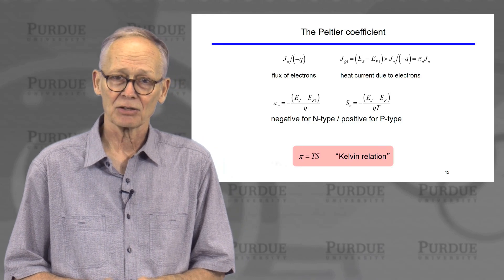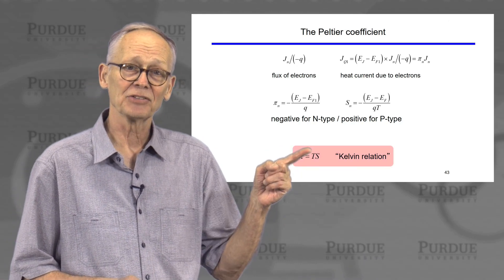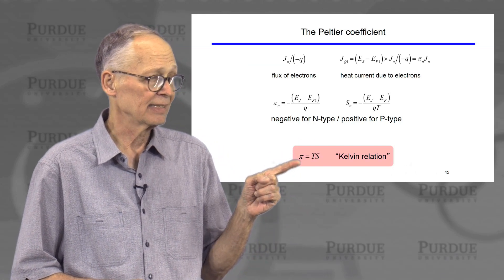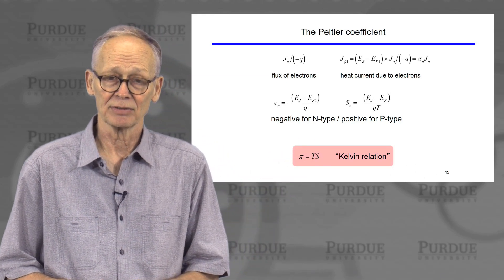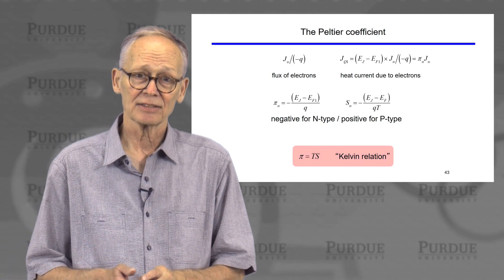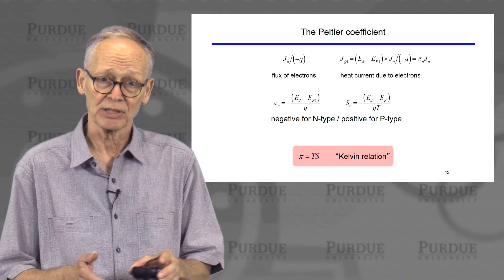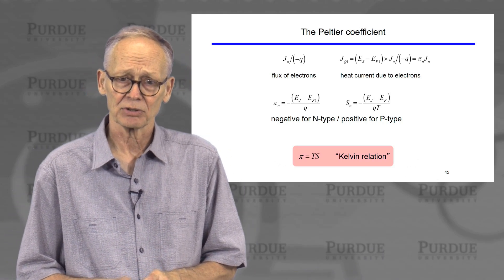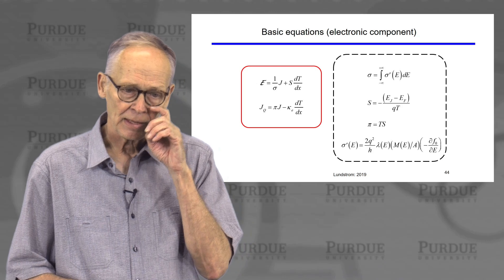But it also should remind us it looks very similar to the expression that we derived for the Seebeck coefficient. In fact, there is a close relation. This is a fundamental relation that can be proven thermodynamically. The Peltier coefficient is temperature times the Seebeck coefficient. So in practice, we only have to measure one and then we know the other. There's an intimate connection between these two transport coefficients.